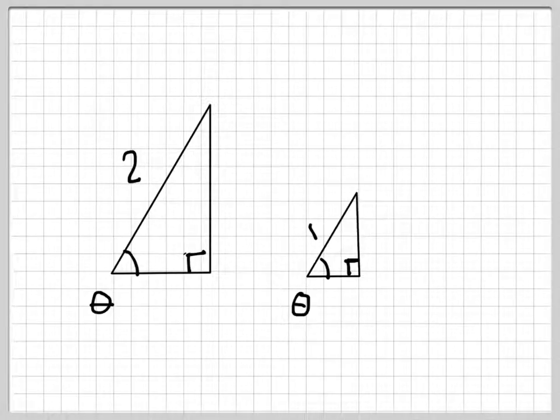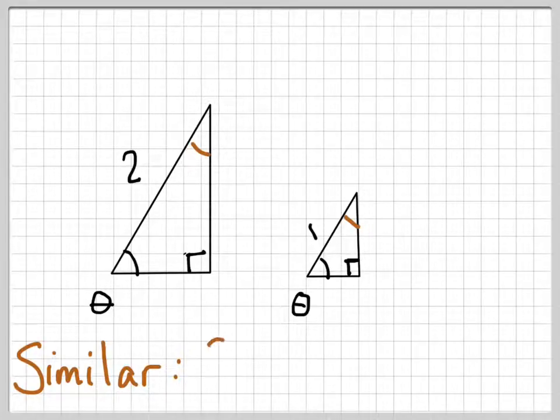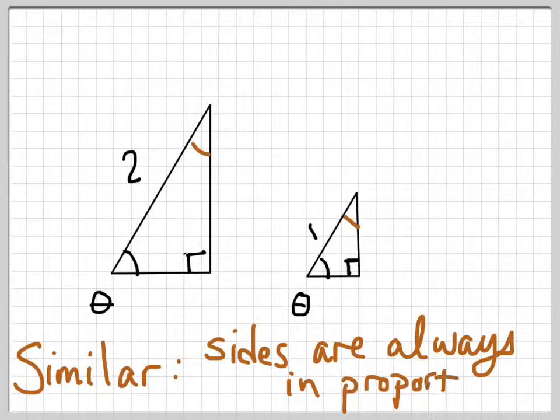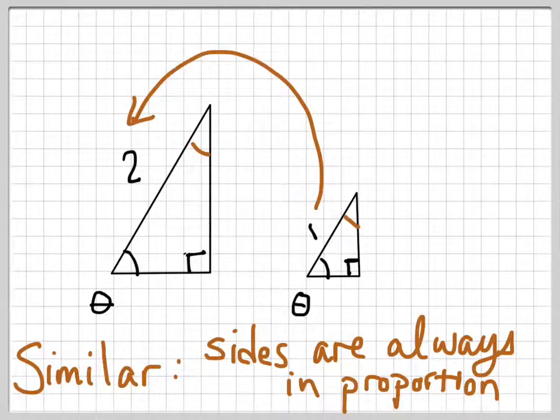Since two of the angles are the same, something you should probably remember from high school is that the two resulting angles that are up here at the top also have to be the same. Since all three angles are the same in both triangles, that means that they're similar. One of the most important things about similar triangles is that sides are always in proportion. So because the hypotenuse is in a one-to-two ratio, all of the other legs are going to be in a one-to-two ratio.